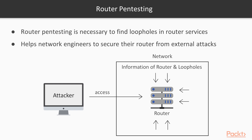By finding all the loopholes, you can basically secure your network by securing your router. Finding out all the loopholes inside your router is called router pentesting — it helps network engineers to secure their router from external attacks. For example, this is your network and an external attacker is trying to connect with your router and access its services. Router pentesting is to secure your network by finding loopholes, and an attacker can exploit your router if it has vulnerabilities.